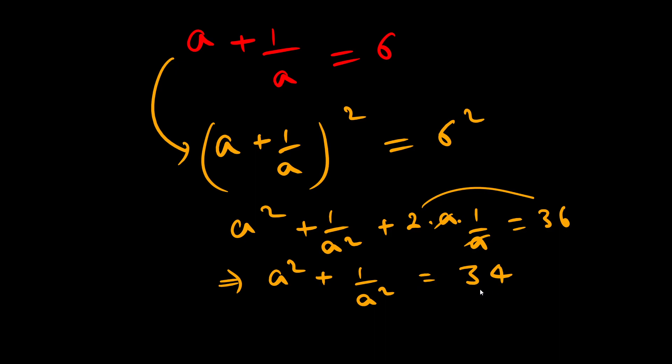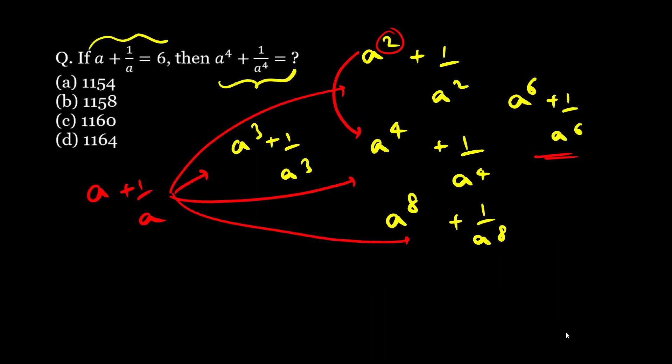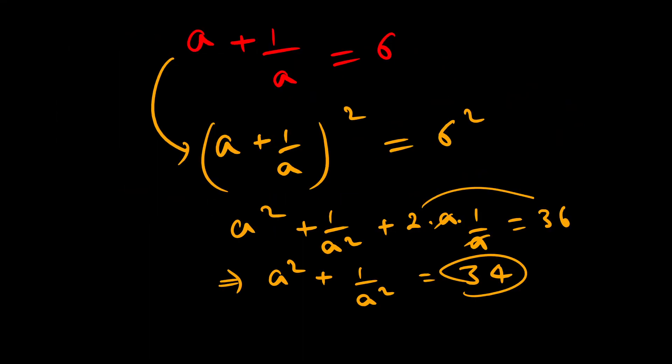So I got a square plus 1 by a square as 34. But I don't want a square plus 1 by a square. I want fourth power. So again I will have to do the same thing. Same method.